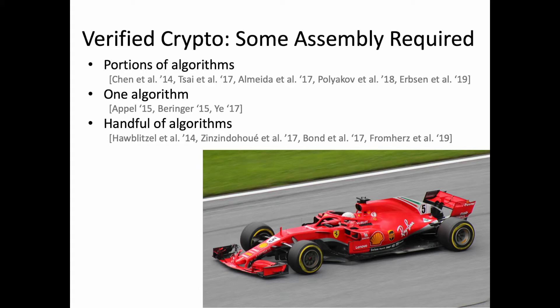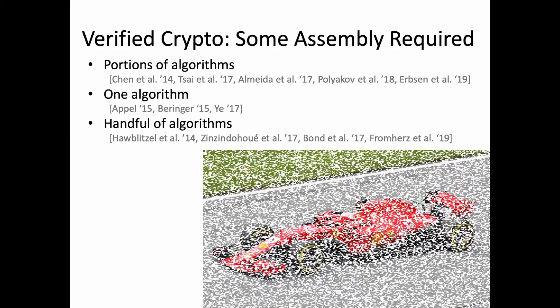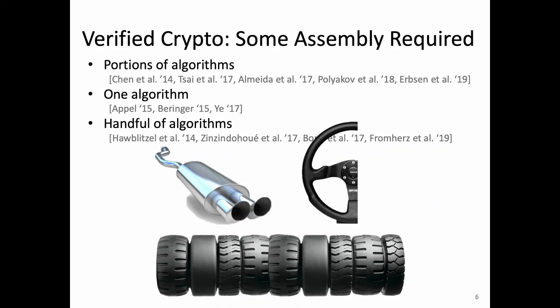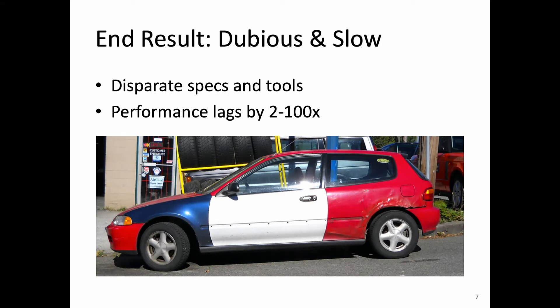So instead of getting the car you wanted, you get maybe half a steering wheel, one muffler, and a whole lot of tires, but no seat or engine. Even if you cobble something together, all of these are verified against different specifications using different tools, and the performance can lag state-of-the-art crypto by orders of magnitude.